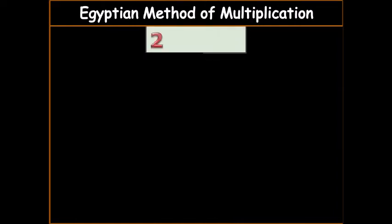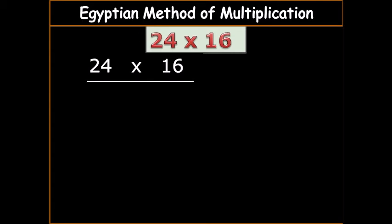Now example 3. 24 times 16. So you write 24 times 16, you underline so that you get two columns. You write 1 and then you write 16.